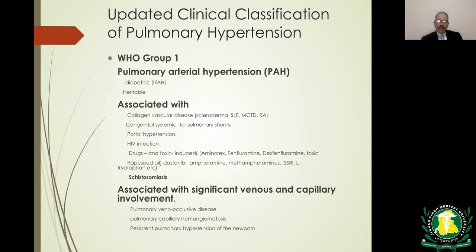One change was moving schistosomiasis from group 5 to group 1. Group 1 is further subdivided into pulmonary arterial hypertension, which includes idiopathic and hereditary forms; conditions associated with connective tissue diseases such as rheumatoid arthritis, mixed connective tissue disease, scleroderma, and SLE; congenital systemic-to-pulmonary shunts; portal hypertension; HIV infection; drugs such as fenfluramine and dexfenfluramine; schistosomiasis; pulmonary venoocclusive disease; pulmonary capillary hemangiomatosis; and persistent pulmonary hypertension of the newborn.